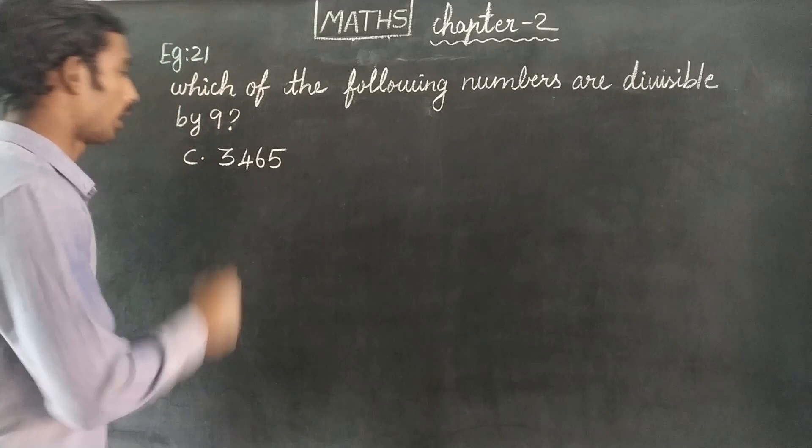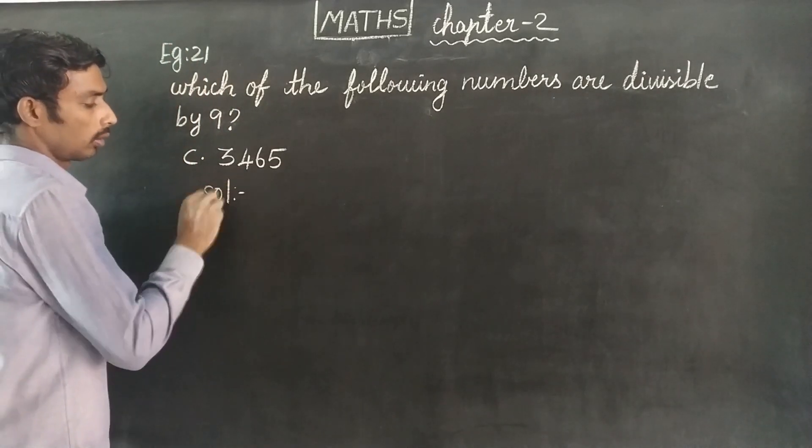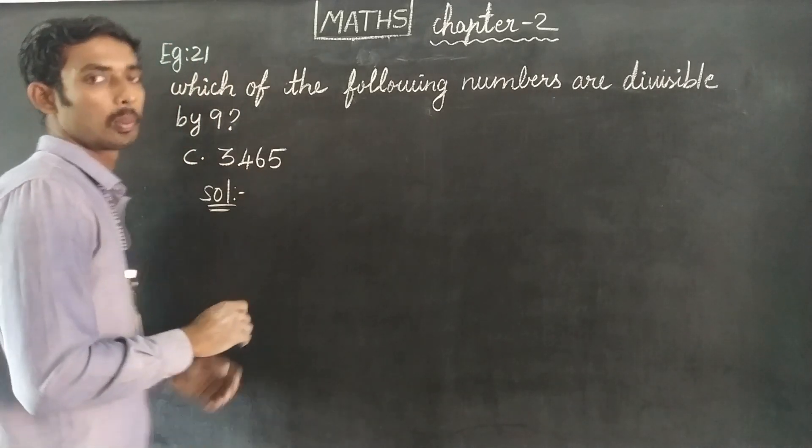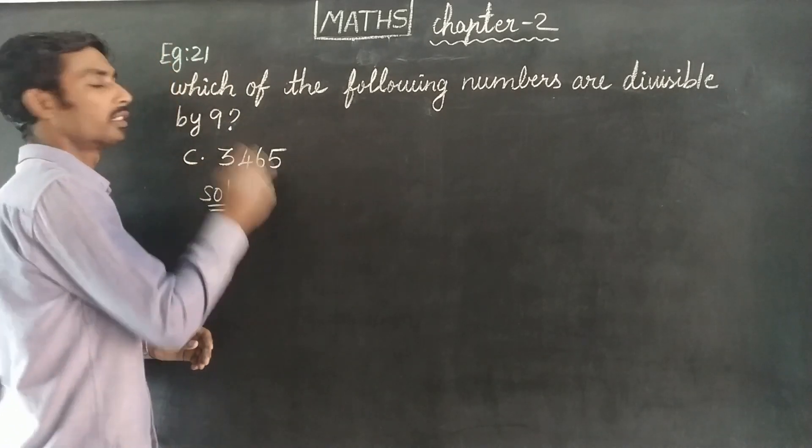So let's answer this. Solution: To check if the number is divisible by 9, we find the sum of the digits.